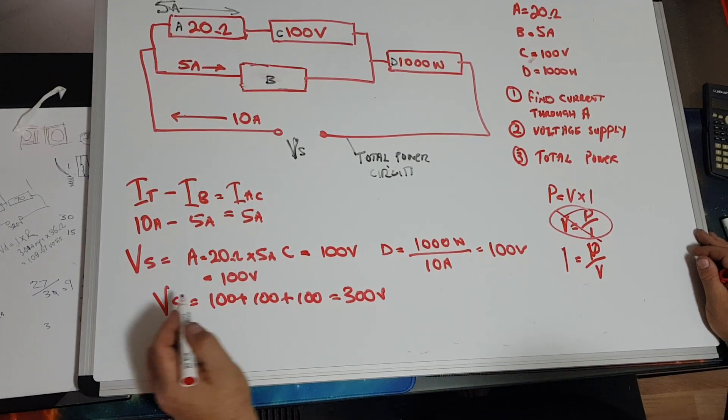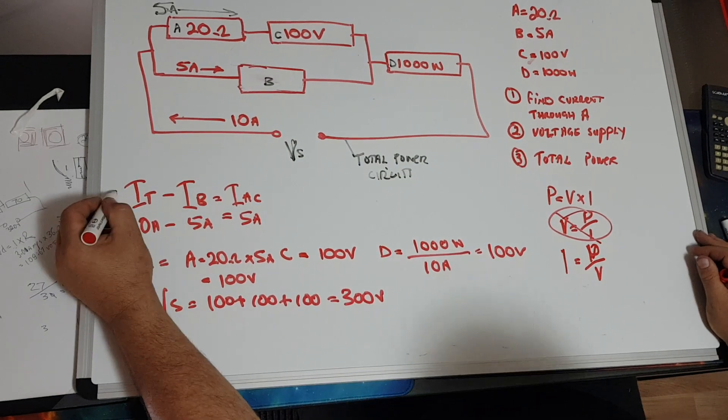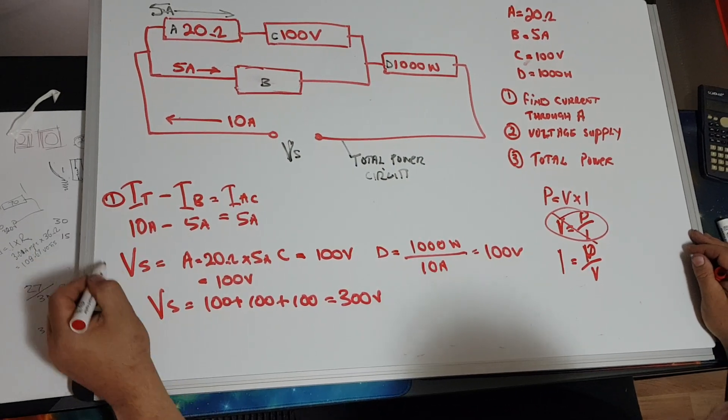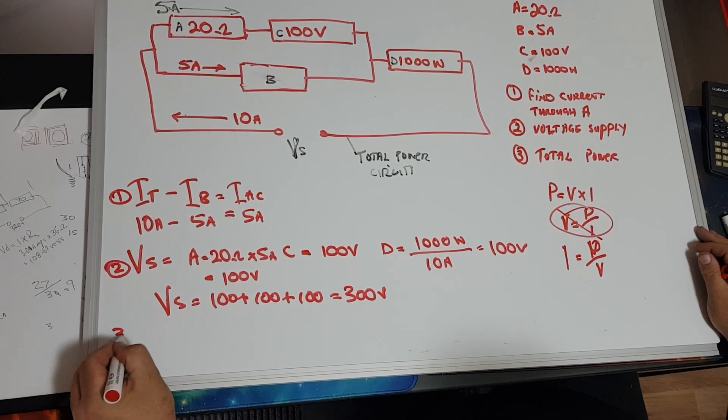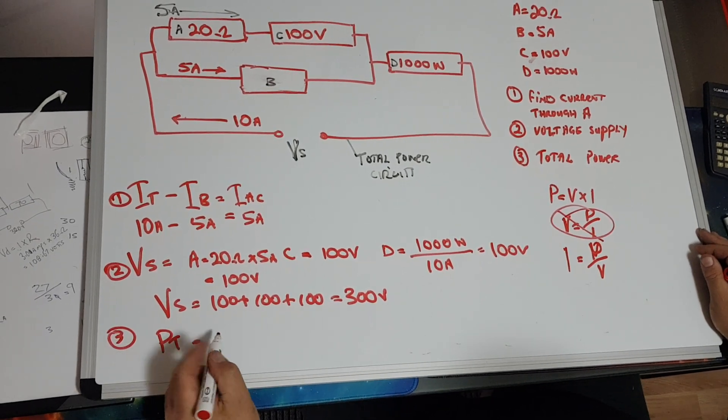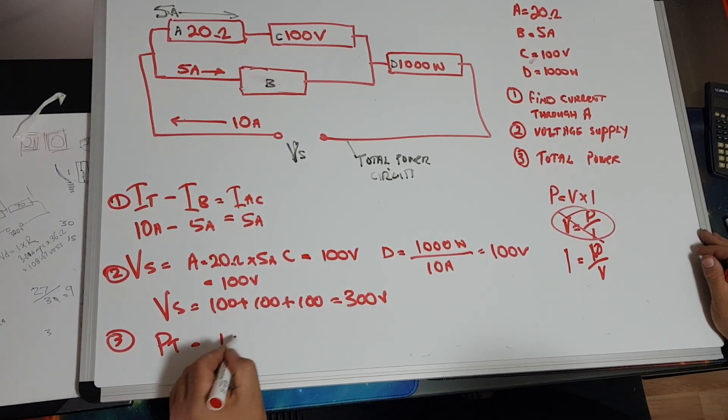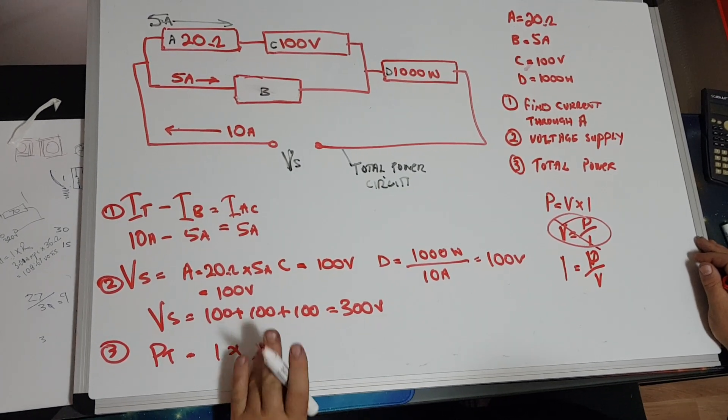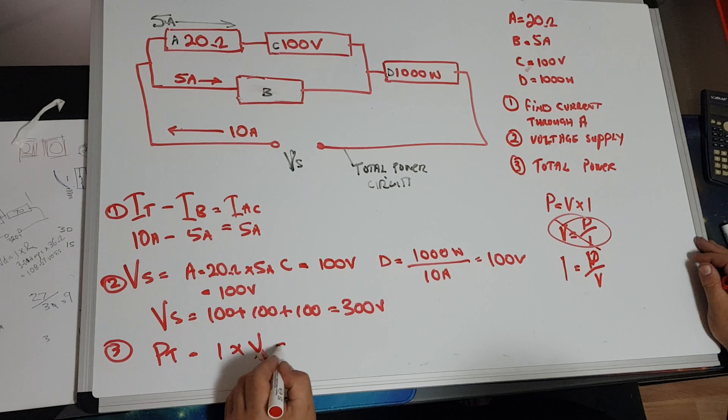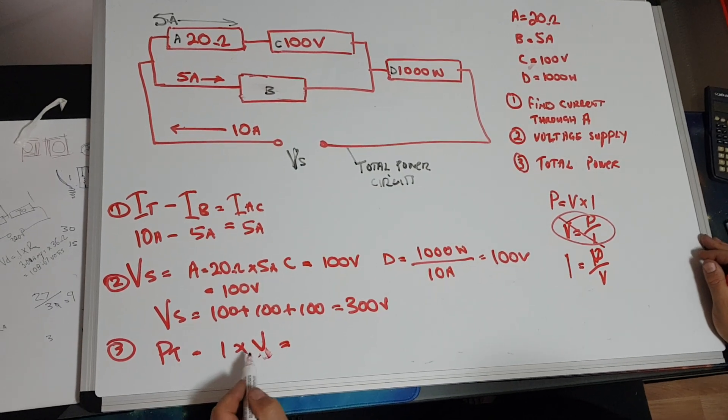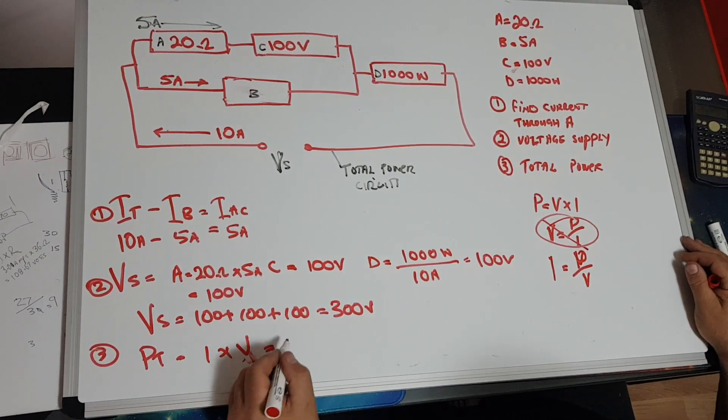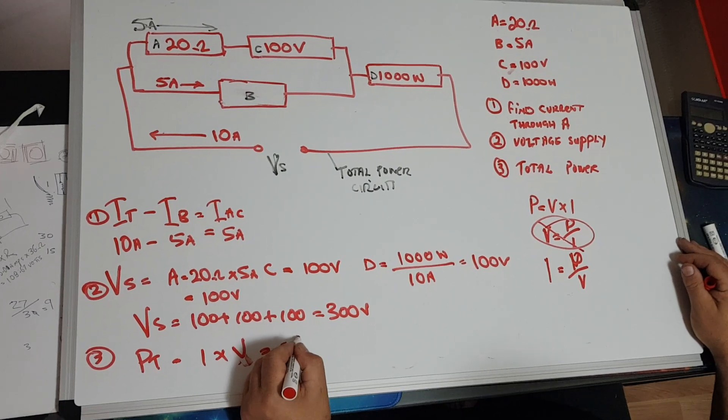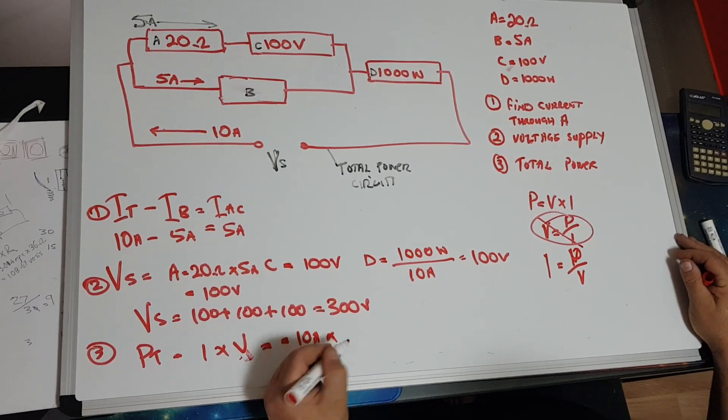All right, now that's one, that's two, and number three: power total equals I times V. Power total equals I times V, which equals 10 amps times 300 volts.